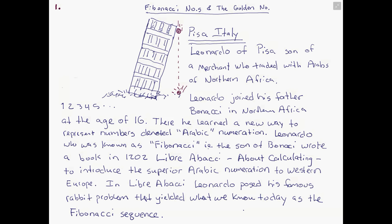First we're going to take a look at a little of the historical background into Fibonacci numbers. Fibonacci, or Leonardo of Pisa, was a merchant of the city-state of Pisa who at the age of 16 moved to North Africa to be with his father to trade with the Arabs.